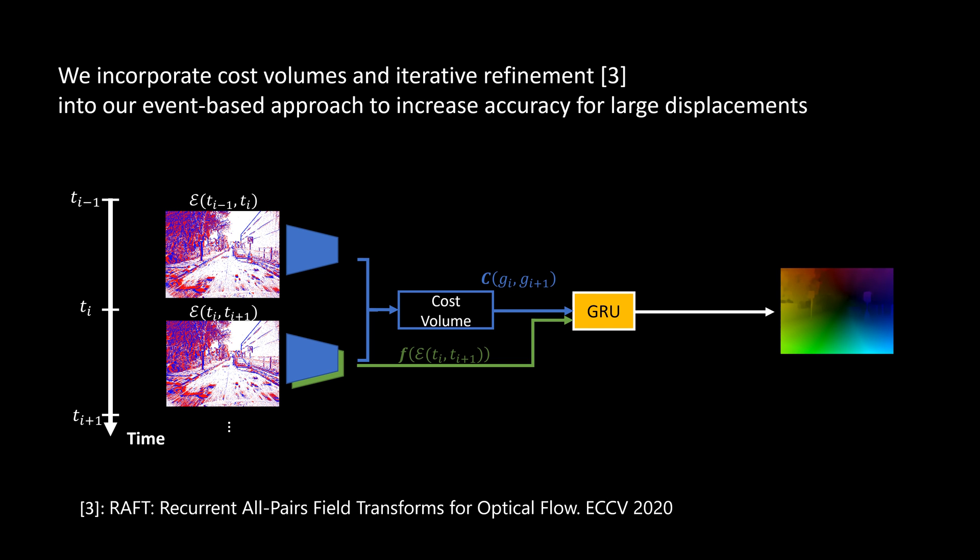We incorporate cost volumes and iterative refinement into our event-based approach to increase accuracy for large displacements. Our approach can explicitly use contrast information present in the event stream to boost performance.